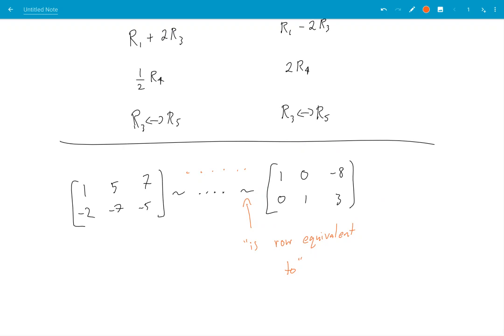And because elementary row operations are reversible, I can go backwards, right? It's possible to start here, do some sequence of elementary row operations and come back here.